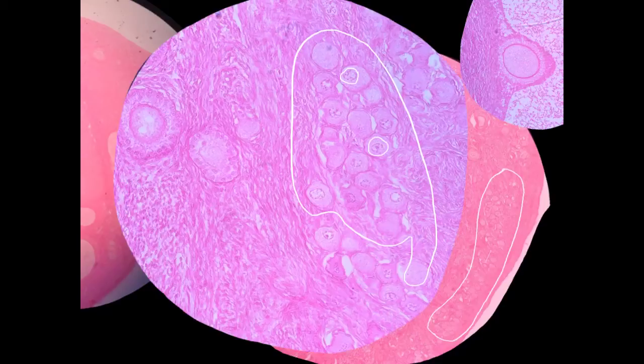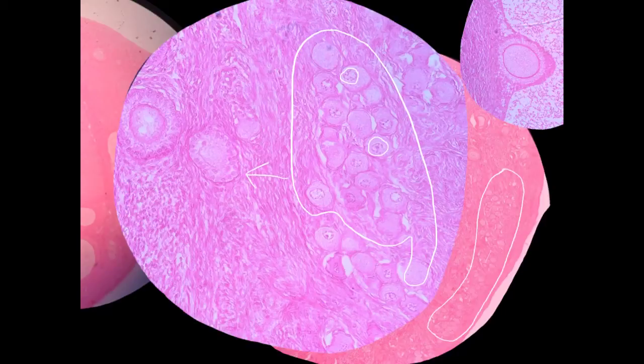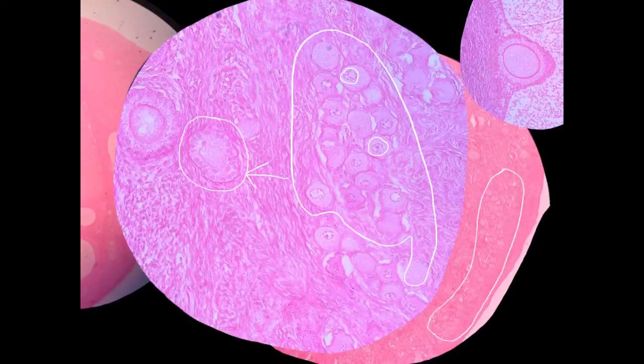Eventually, these cells grow and develop into something like this. This one is a very small secondary follicle.